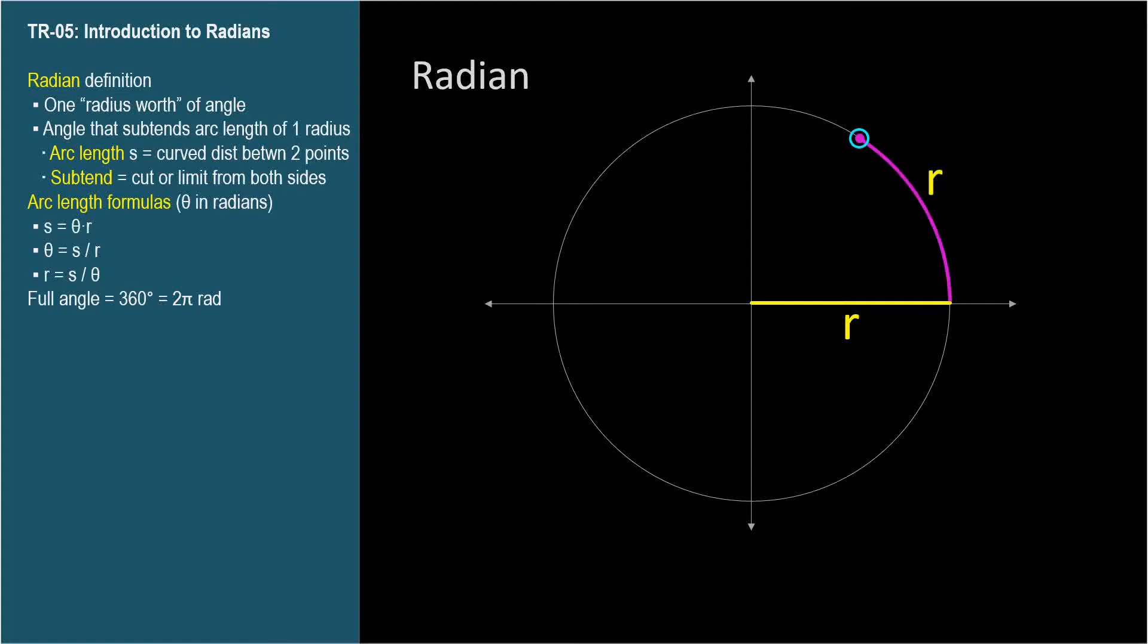It has an endpoint on the circle, and we know that points on the circle correspond to standard position angles. This point corresponds to an angle of one radian. You can think of one radian as one radius worth of angle.